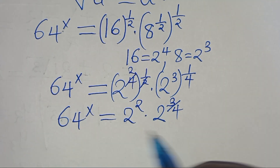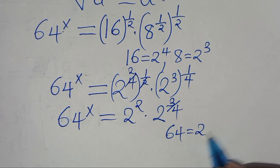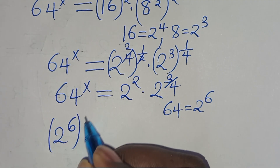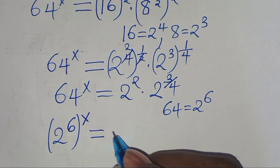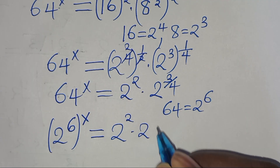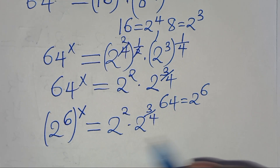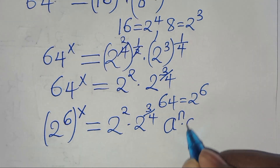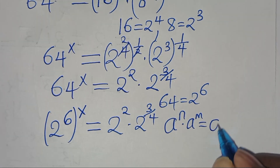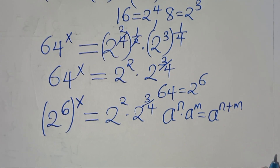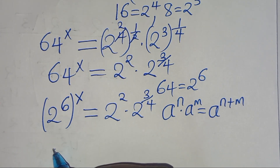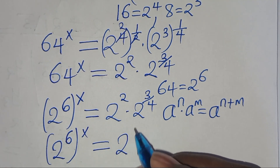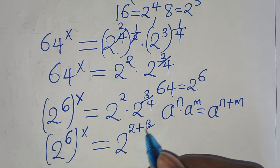And we can express 64 as 2 to the power of 6. So we have 2 to the power of 6 raised to the power of x, this is equal to 2 to the power of 2, times 2 to the power of 3 over 4. Now, 2 to the power of 2 times 2 to the power of 3 over 4 is in the form of a to the power of n times a to the power of m, which we can express as a to the power of n plus m. Applying this, we have 2 to the power of 6 raised to the power of x, this is equal to 2 to the power of 2 plus 3 over 4.